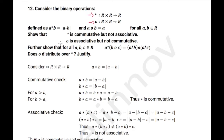So, there are 2 operations defined here: a★b = |a − b| and a∘b = a. We need to show that ★ is commutative but not associative, and ∘ is associative but not commutative. Also we need to show that a★(b∘c) = (a★b)∘(a★c), and check if ∘ distributes over ★ or not.